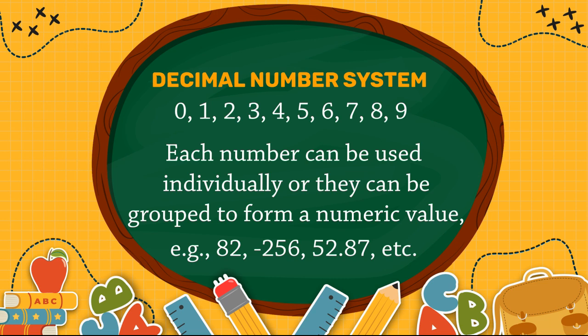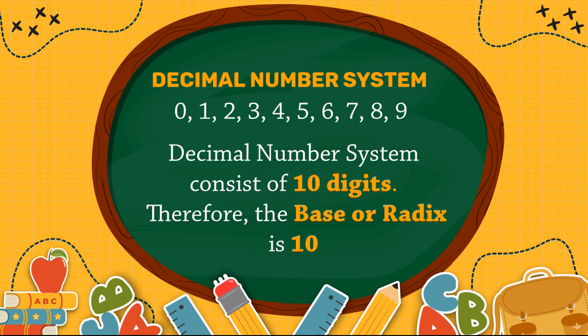For example: 82, minus 256, 52.8. The decimal number system consists of 10 digits, therefore the base or radix is 10.